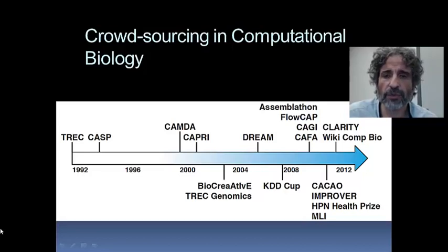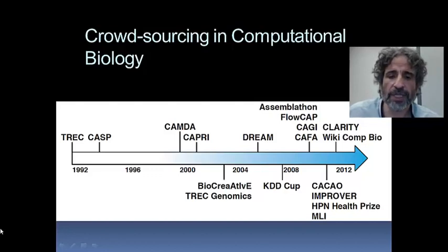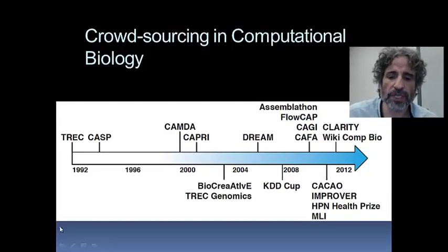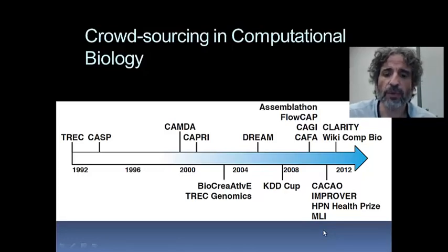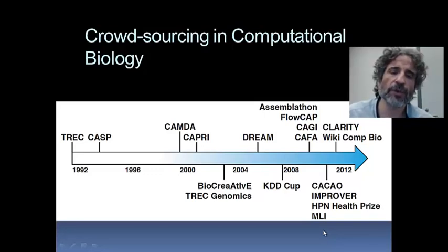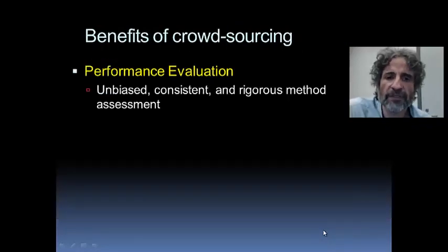All of them play a role because we believe that crowdsourcing and collaborative competitions have a place in moving our field forward. Of note is also IMPROVER, another effort I have been involved with — a similar concept to DREAM — with emphasis on quality control of processes in industrial research. IMPROVER stands for Industrial Methodology for Process Verification in Research. Now, what are the benefits of crowdsourcing?